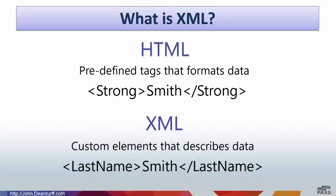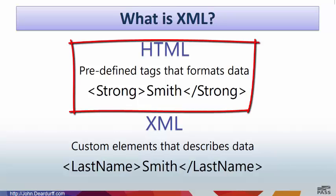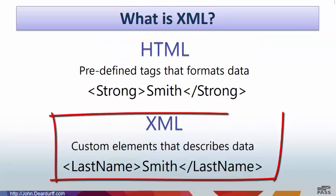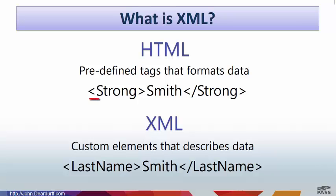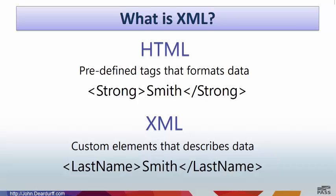So what is XML? XML stands for Extensible Markup Language. It is an extension of the web standard HTML. The difference being that HTML uses predefined tags that format data on a web page. XML, on the other hand, is used to create custom elements that describe the data. Tags are used to define the beginning and ending of an element. In the case of HTML tags, we are using the predefined tags that will put the word Smith into bold letters. With XML, the begin and end tags are used to describe that the word Smith is the last name element.